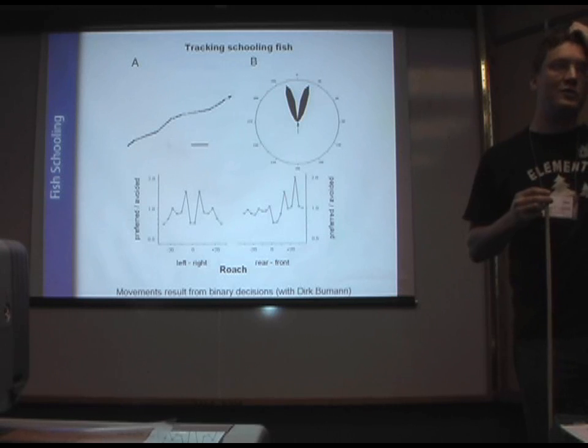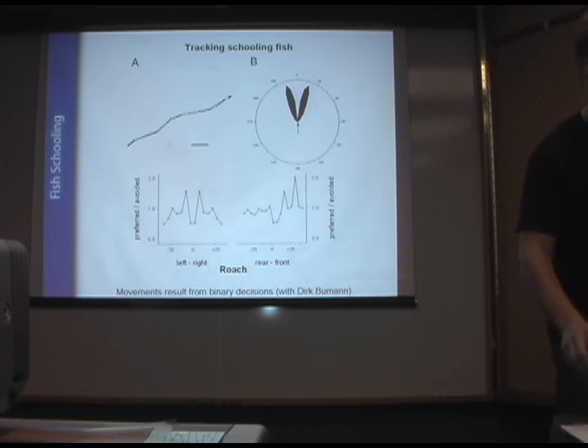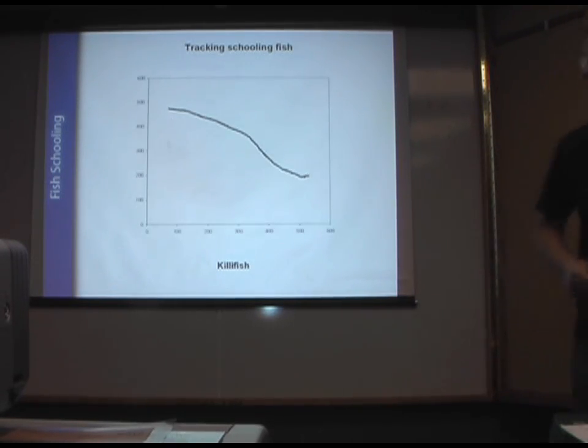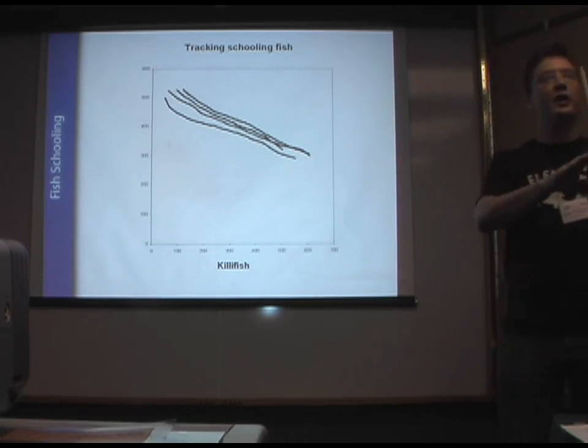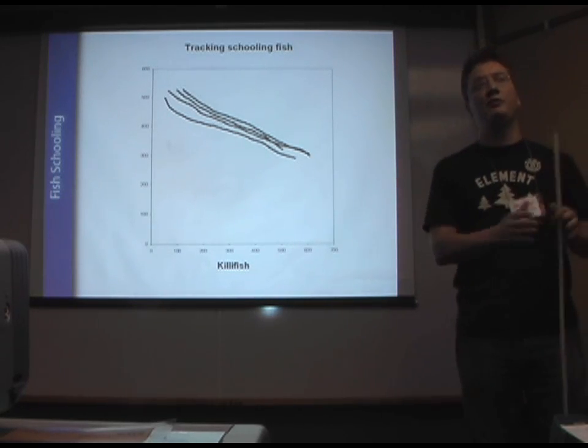So when we saw this, we thought, wow, this is great. This is very different to the models. This is giving us new ideas. So we decided to look at another very common species of fish, the killifish. When we looked in detail at the movement, it was completely different to the roach. These ones don't have that left, right behavior at all.